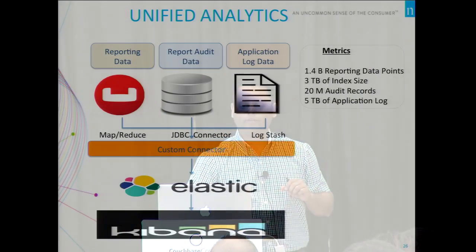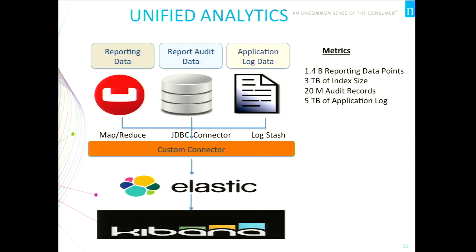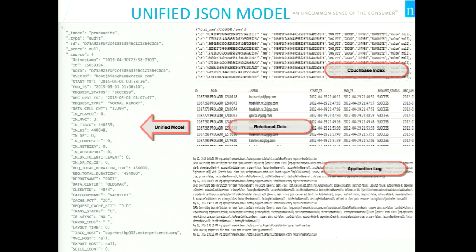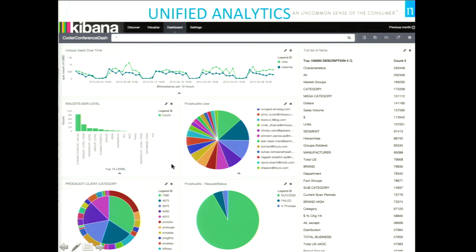We have about 1.4 billion reporting data points, three terabytes of index size, and five terabytes of application log. We get data from multiple sources, build a unified model, push it into Elasticsearch, and use Kibana's aggregation engine to show dashboards.